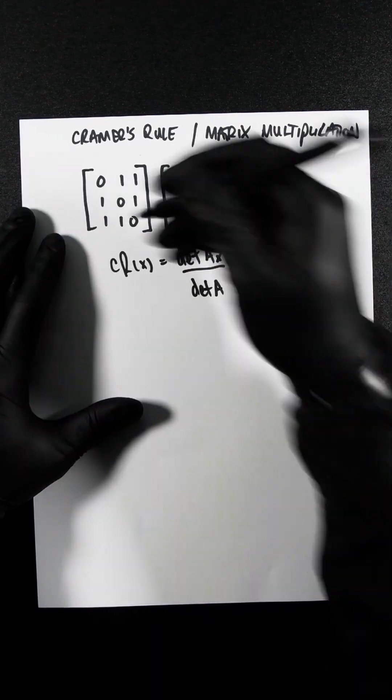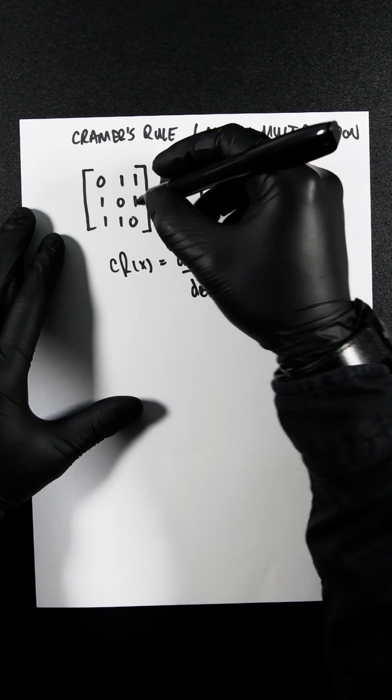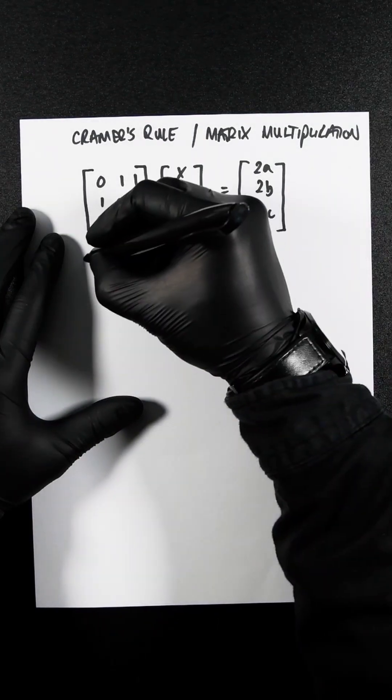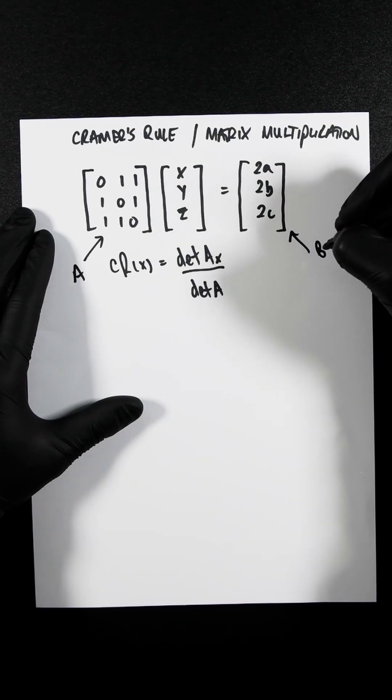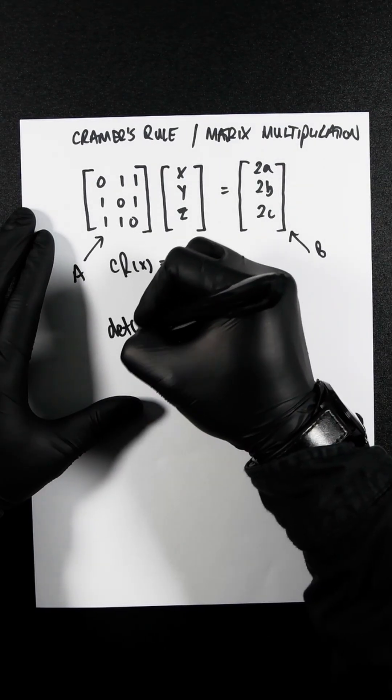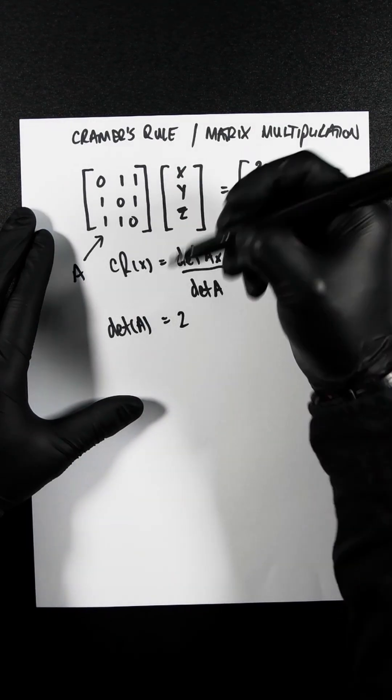So I'm not going to work out the entire determinant for a 3x3 matrix. I've got an entire video on that. But if this is A and this is B, that means the determinant of A is 2. So that whole determinant is 2.